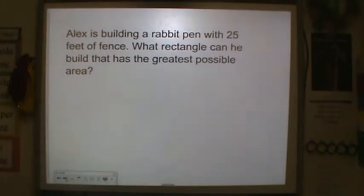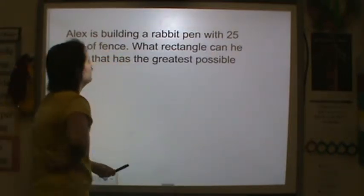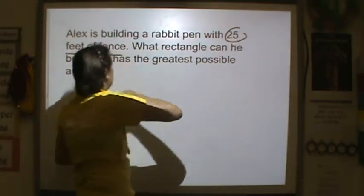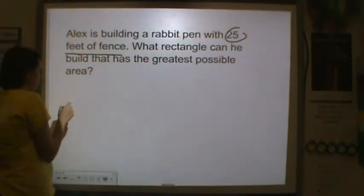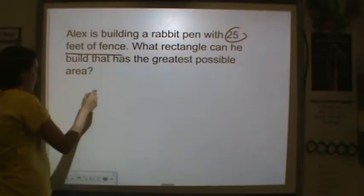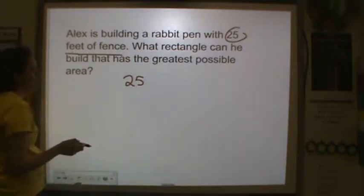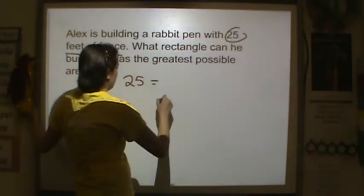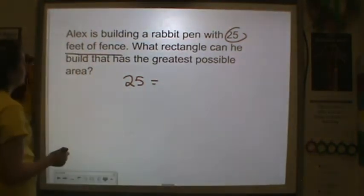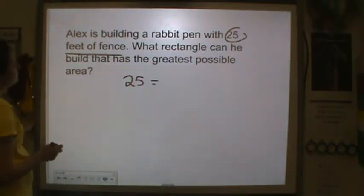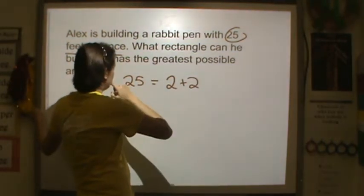Alex is building a rabbit pen with 25 feet of fence. What rectangle can he build that has the greatest possible area? His perimeter is 25. So I need four numbers that can add up to 25 because fence is perimeter. So I know that I could do numbers that add up to 25. 25, we can't really divide that by two evenly because it's an odd number. So I'm going to have to go backwards and think of numbers that I can add that can get to 25. Let's do 2 plus 2 is 4. I get 21. That won't work.